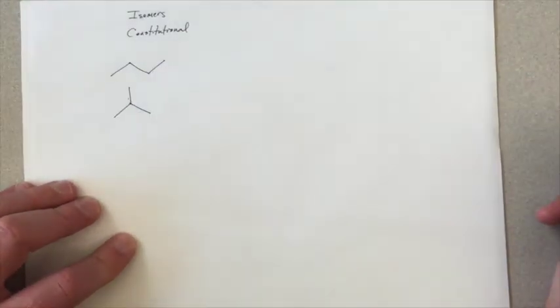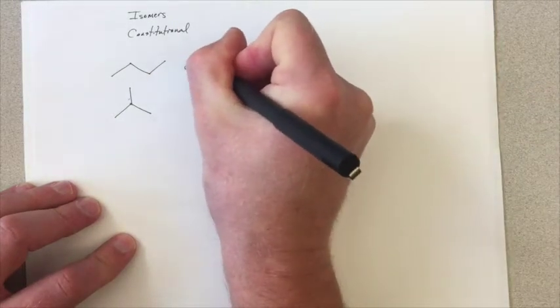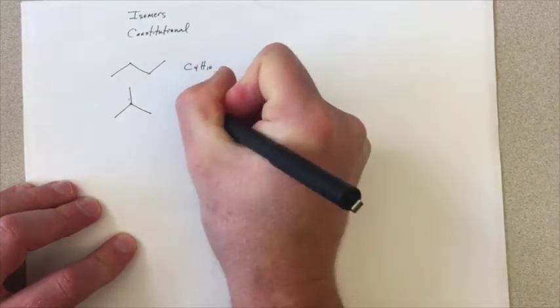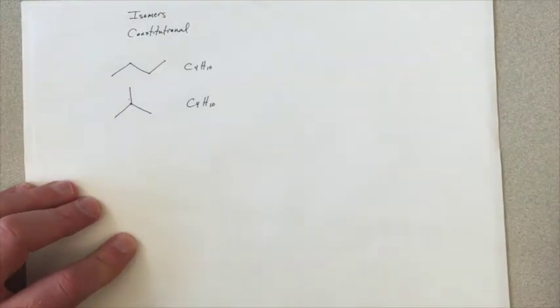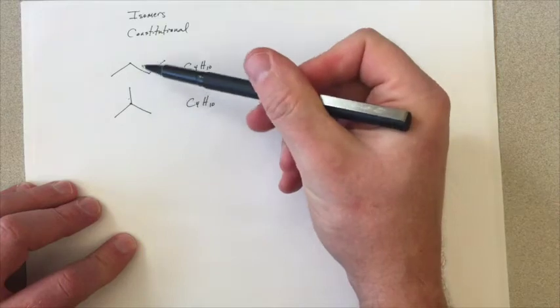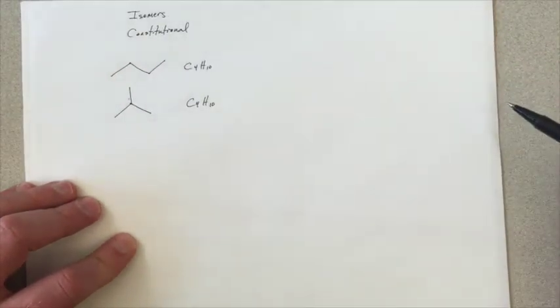These are the two constitutional isomers of butane, and if you count the number of carbons and hydrogens in them, you'll see that they both have the same number and the same type. They're just connected in different ways, and so they are isomers of each other, and these we call constitutional isomers of each other.